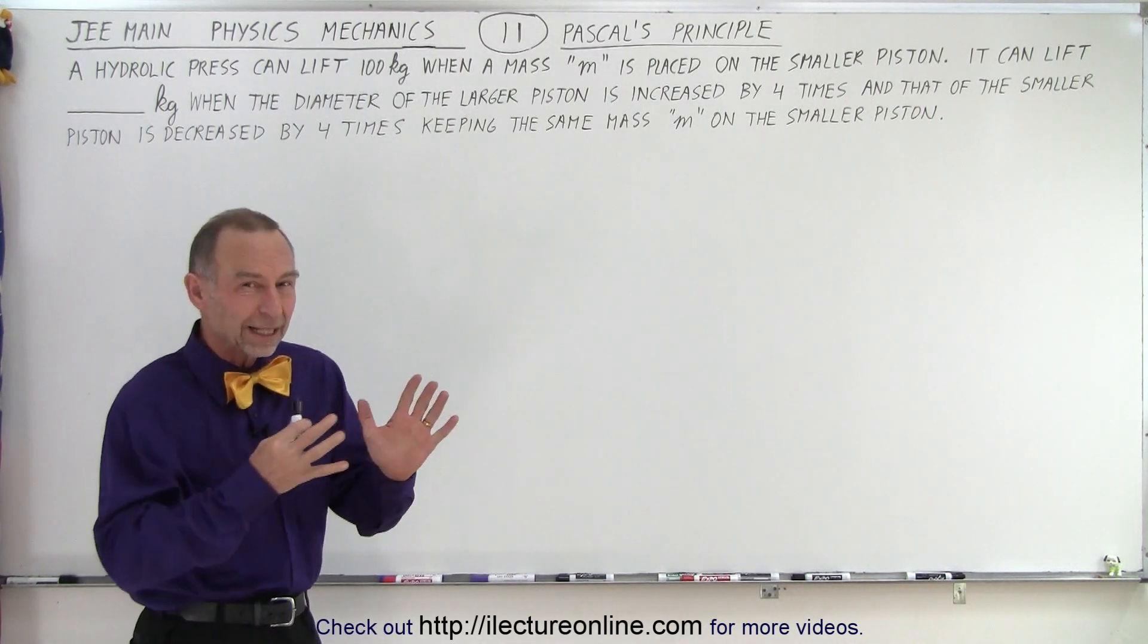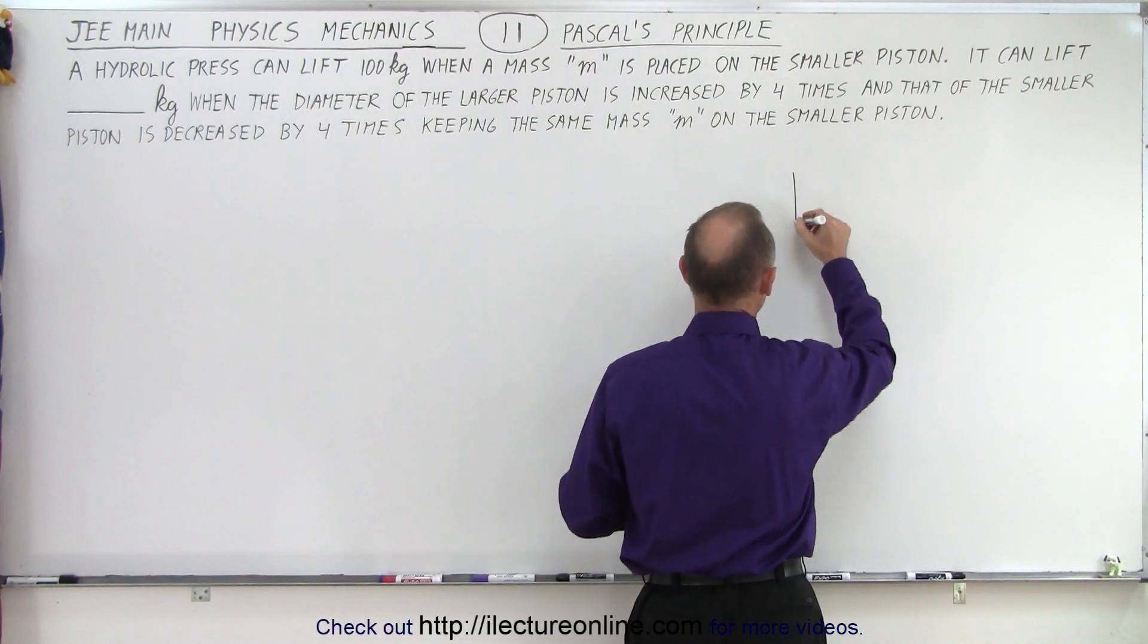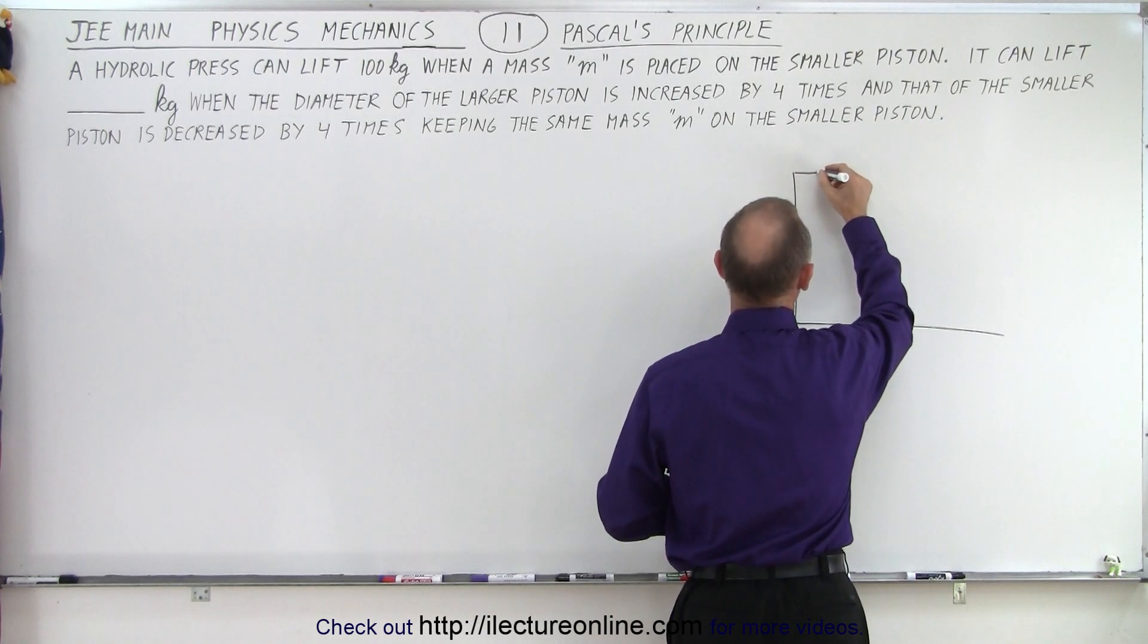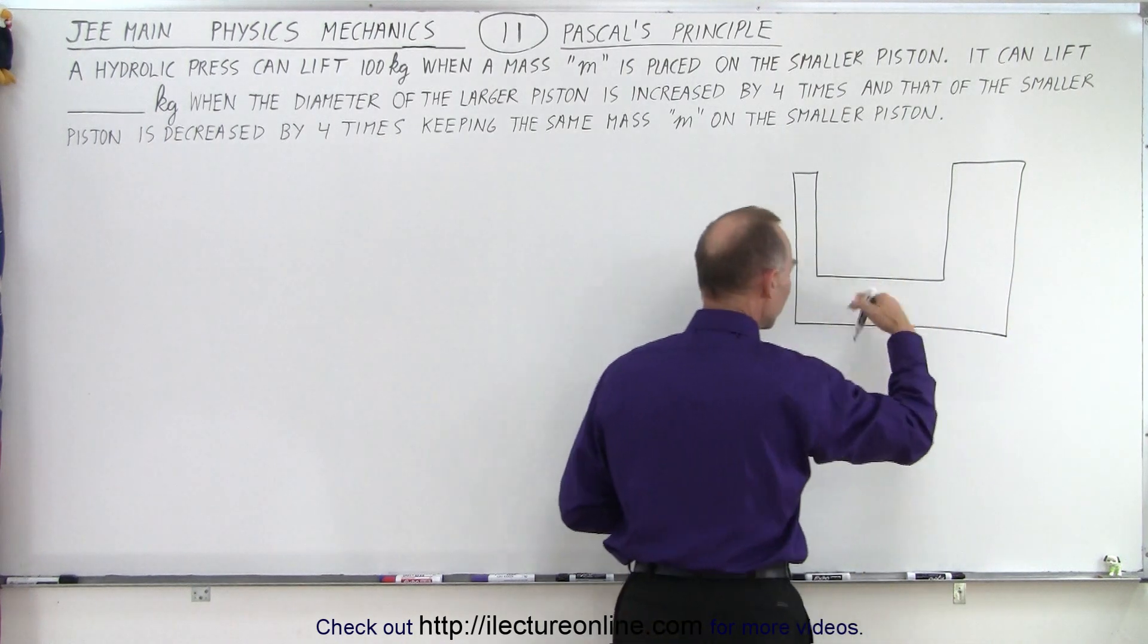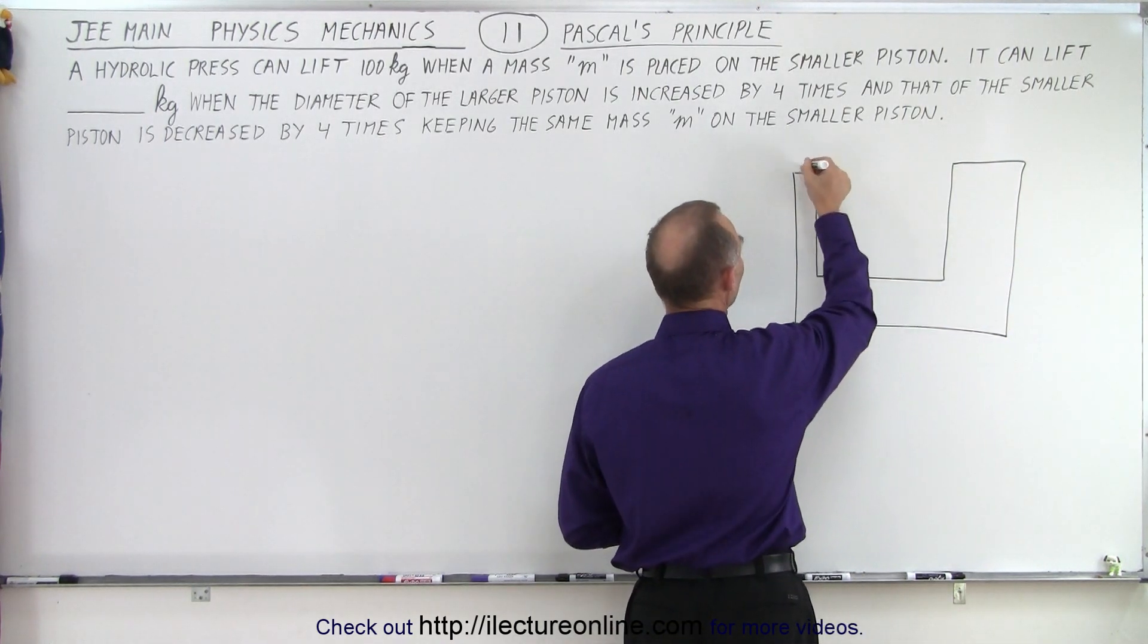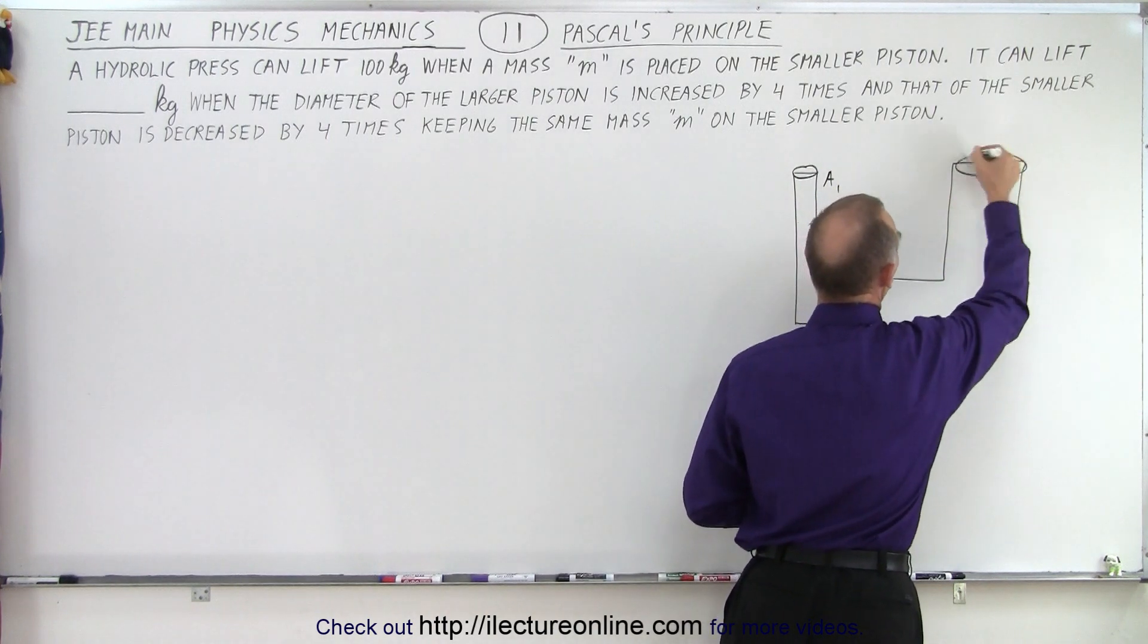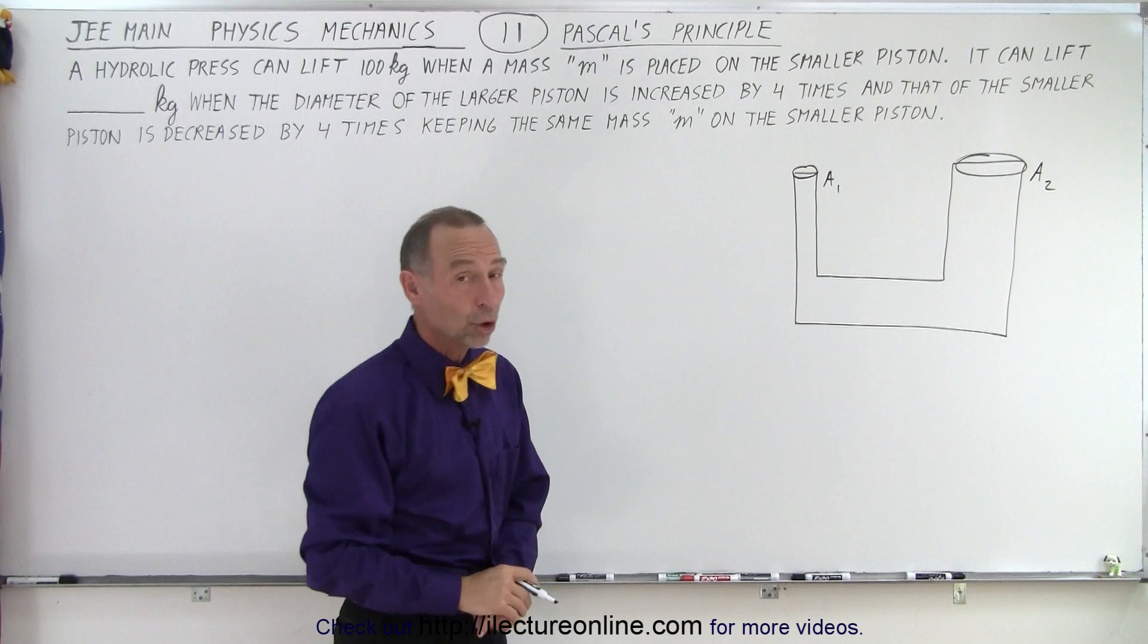Now they didn't give us a diagram, so quickly let's draw a diagram of what we're thinking is happening. So we have something like this, where we have a small piston and we have a large piston. Fluid down here, so here we can say that this, let's call that A1, and over here the cross-sectional area of the larger piston, let's call it A2.